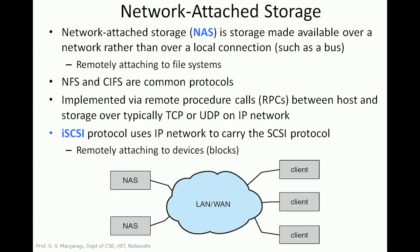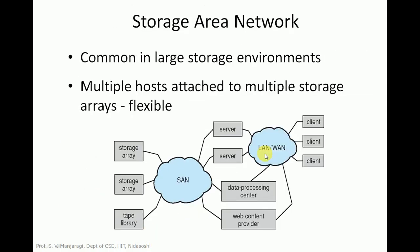Now let us look at storage area network (SAN). A problem with network attached storage is that storage IO operations can consume bandwidth on the data network, thereby increasing latency of network communication. This problem can be solved with a storage area network. A storage area network is a private network connecting servers and storage units. It makes use of storage protocols instead of network protocols. The storage area network is more flexible, and multiple hosts and multiple storage areas can attach to the same SAN. The storage can be dynamically allocated.